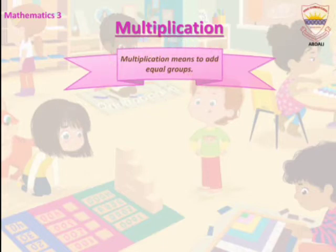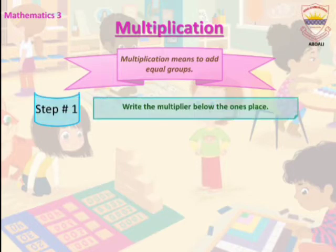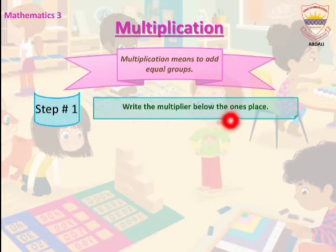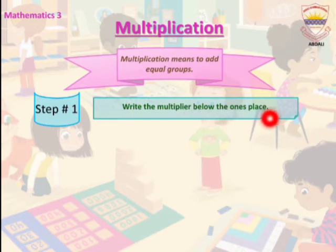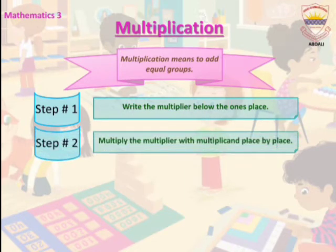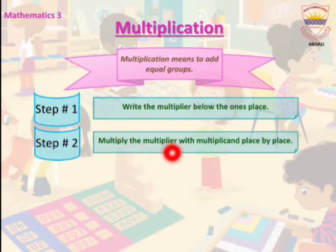Now students, we have some steps to follow to solve multiplication questions. Step 1: write the multiplier below the 1's place. Step 2: multiply the multiplier with the multiplicand place by place.